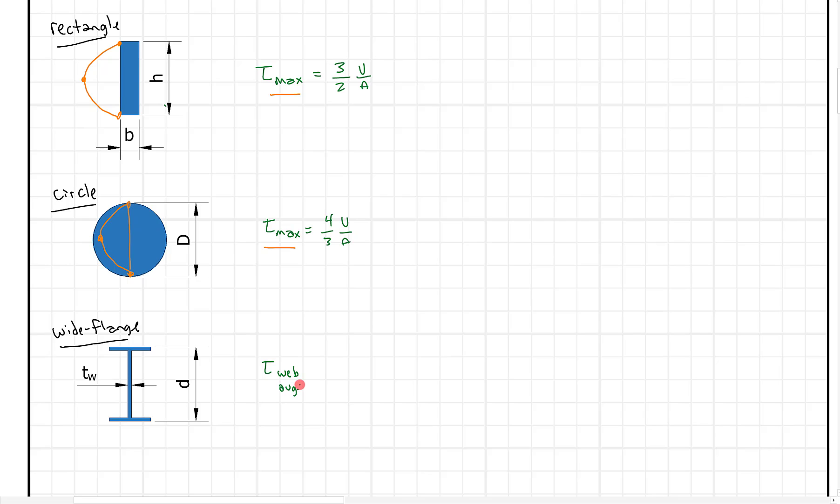So the average of the web is just going to be the shear over the depth times the thickness of the web. That's going to be a decent approach because in this case, if we're looking at shear stress distribution, we're going to have a little bit of stress here. But then once it gets into the web, it's actually going to shoot up and then come back down.